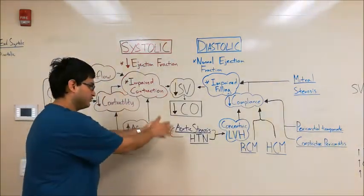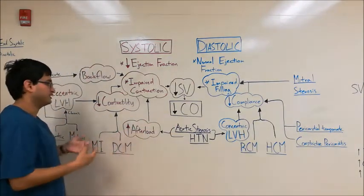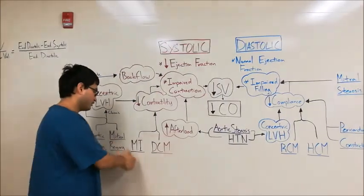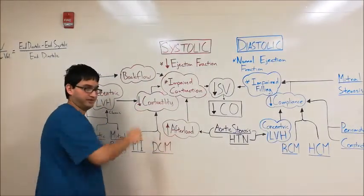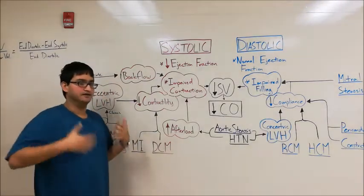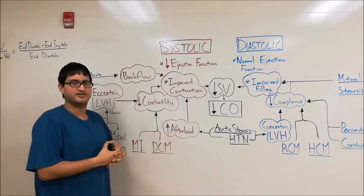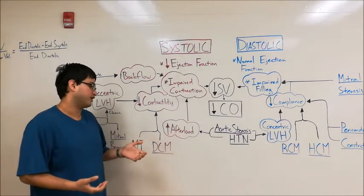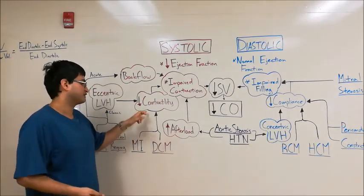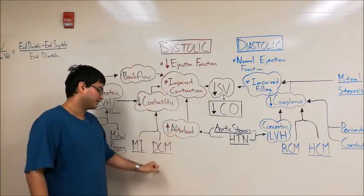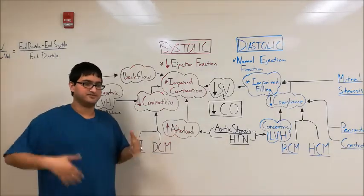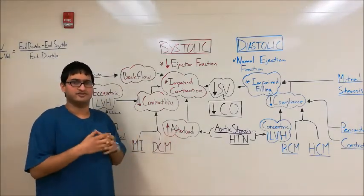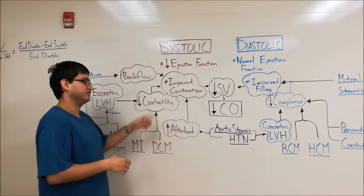In addition to increased afterload, we can think about processes that lead to decreased contractility, which would impair contraction. Myocardial infarctions and dilated cardiomyopathies can both lead to decreased contractility. In a myocardial infarction, death of myocardial tissue means less total muscle working, so you lose pumping power — leading to decreased contractility and systolic heart failure. In dilated cardiomyopathy, in response to stimuli like drugs, alcohol, and various diseases, the heart remodels by increasing its volume but decreasing its contractile strength, leading to decreased contractility and systolic heart failure.